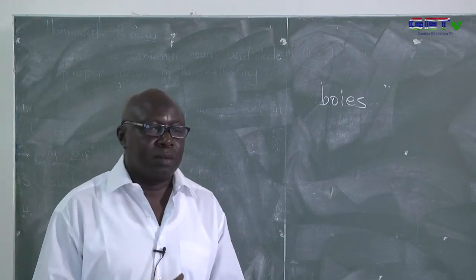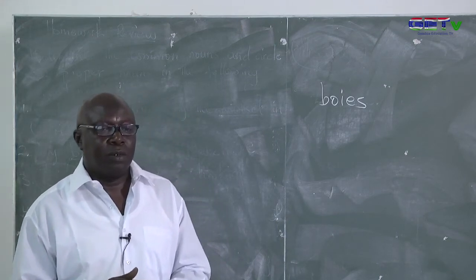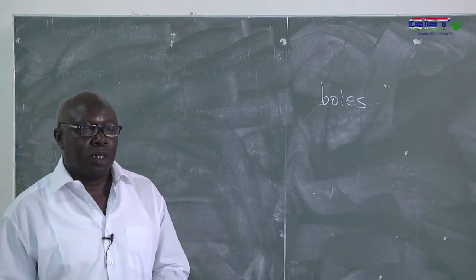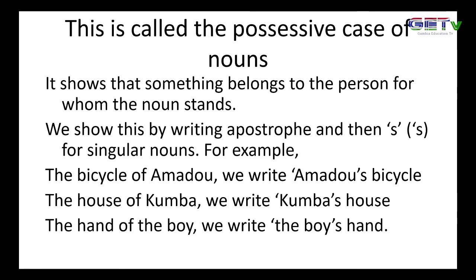This is the dog's tail. Marlon's donkey is called Milky. Mrs. Cham is doing a teacher's job. That is our headmaster's car. This is what is called in English language the possessive case of nouns. It shows that something belongs to the person for whom the noun stands. We show this by writing apostrophe and then S — apostrophe S — and that is for singular nouns.